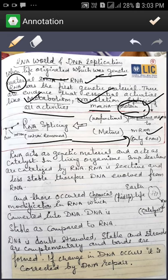So RNA acts as a genetic material and acts as a catalyst also. Catalyst means it helps the reactions to occur fast. In living organisms, important reactions are catalyzed by RNA. So RNA is reactive and less stable, therefore DNA evolved from RNA.